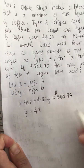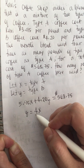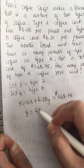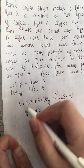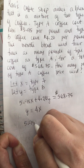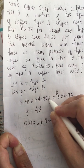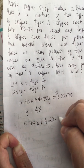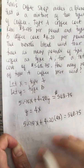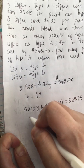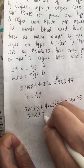Now we can solve this equation. It's easier to solve by substitution, so we substitute y equals four x into the first equation: 5.95x plus 4.20y, where y equals four x, is equal to five hundred sixty-eight point seventy-five.